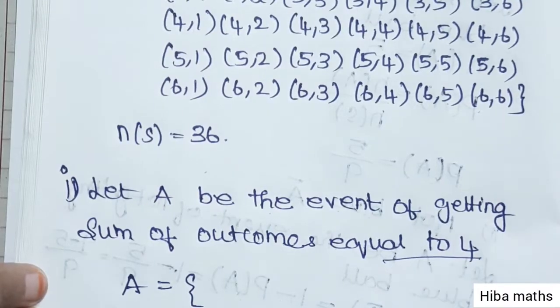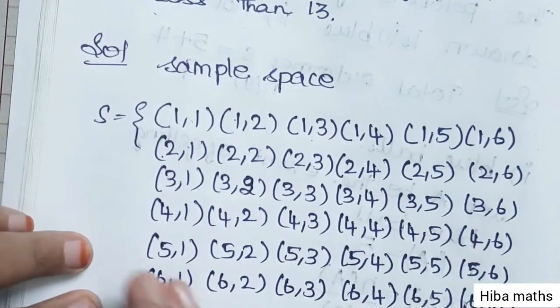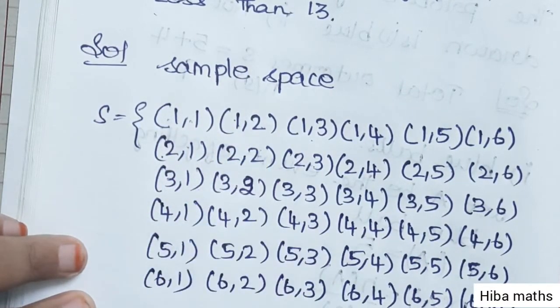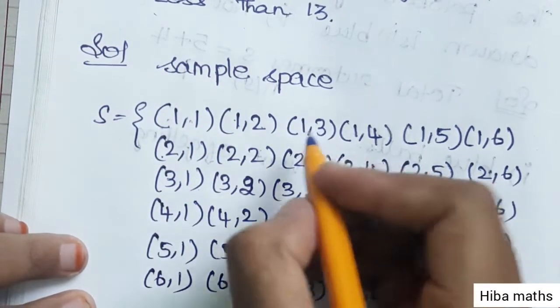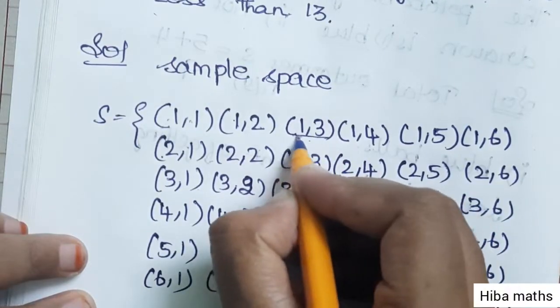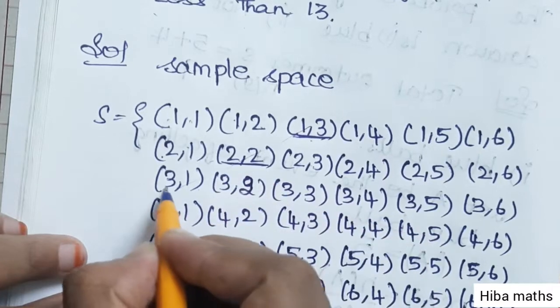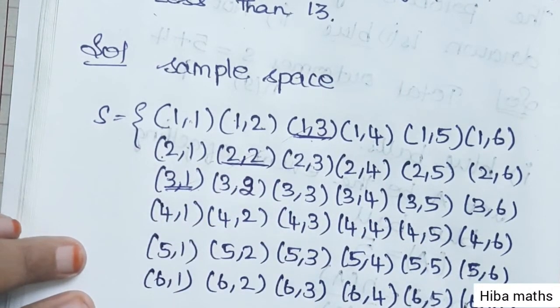Part (i): Find when the sum is equal to 4. Looking at the sample space: 1 plus 1 is 2, 1 plus 2 is 3, 1 plus 3 is 4. We need outcomes that add to 4. We have: 2 plus 2 is 4, and 3 plus 1 is 4.